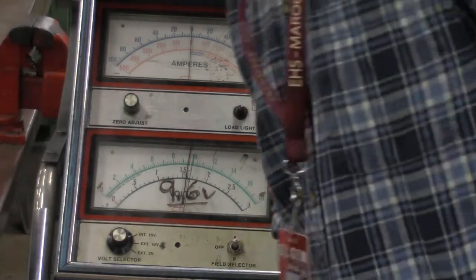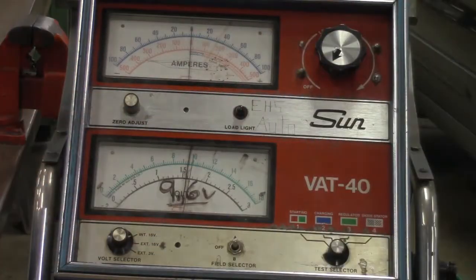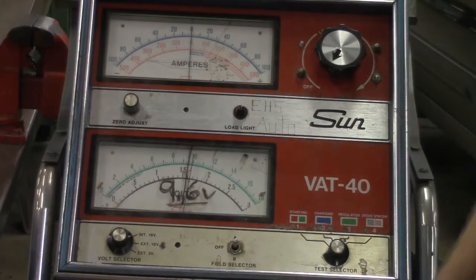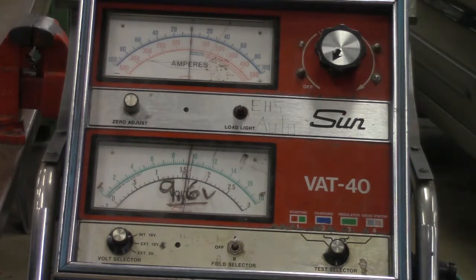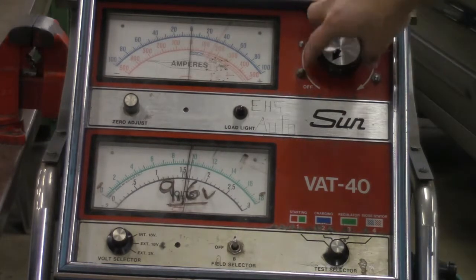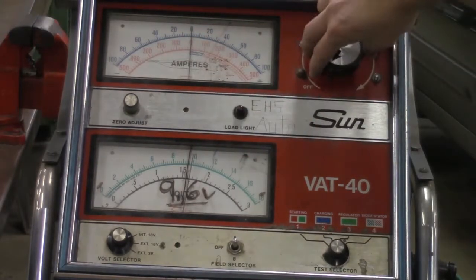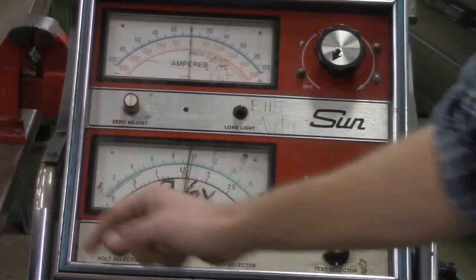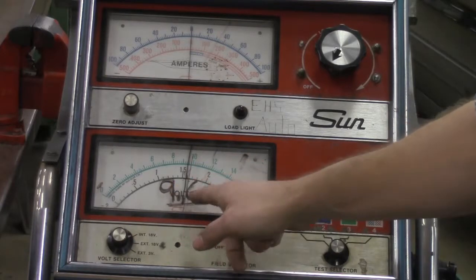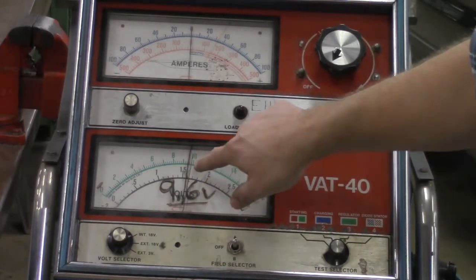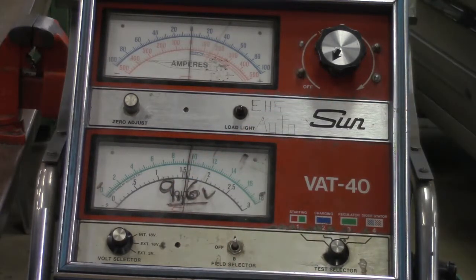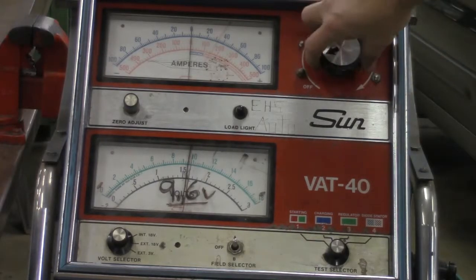The cold cranking amp reading on this battery is 600. So we're going to go ahead and we're going to load test it to 300 amps. So what I'm going to do is just go ahead and turn my dial again. I'm going to watch my gauge and I'm going to see it go all the way over to the 300 mark. And I pay close attention to my voltage. I don't want it to go below 9.6, but judging on that right now, it seems like it's going to be pretty inevitable. I'm going to go ahead and load this up.